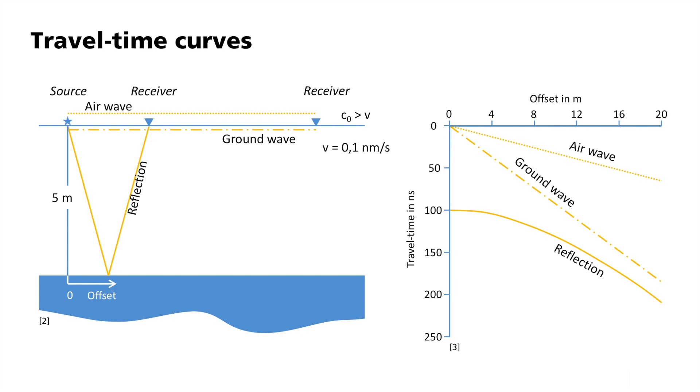One characteristic that does not occur in seismics is the so-called lateral wave. This is a wave which is refracted at the Earth's surface. Similarly to the head wave in seismics, it propagates at the layer boundary with the higher wave velocity of air.